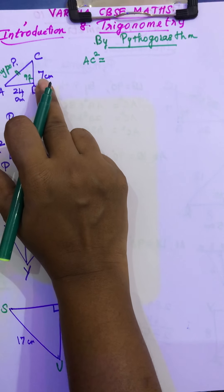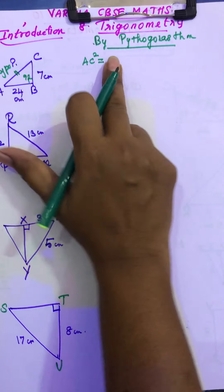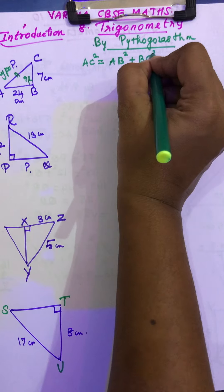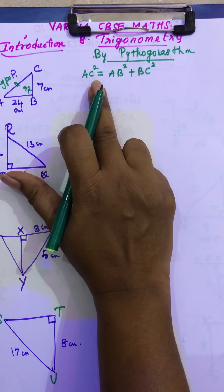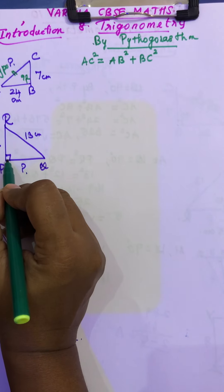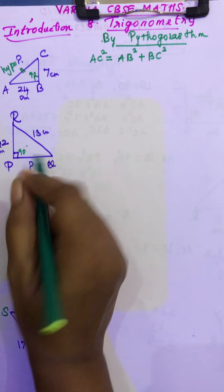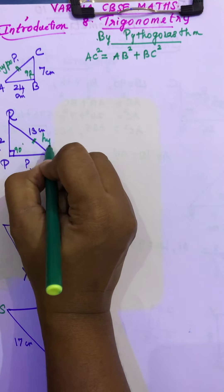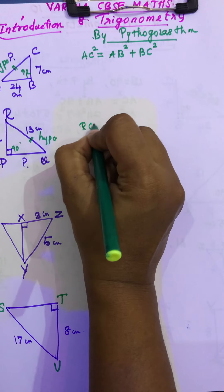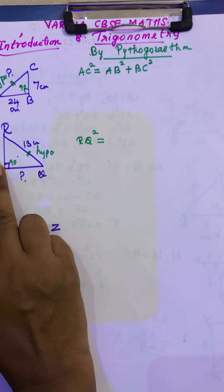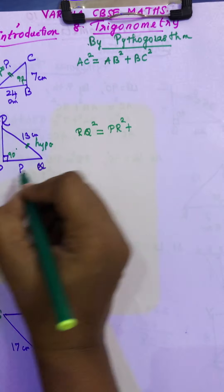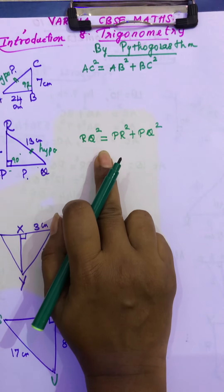These are the other two sides. You have to write the hypotenuse here equal to the other two sides: AB² + BC². Now for the second triangle — this is a right angle triangle. Where is your 90 degree? In P, it is 90 degrees given. What is your hypotenuse? This is your hypotenuse. In this sum, hypotenuse is RQ. So RQ² = sum of the squares of the other two sides: PR² + PQ². Do you understand?